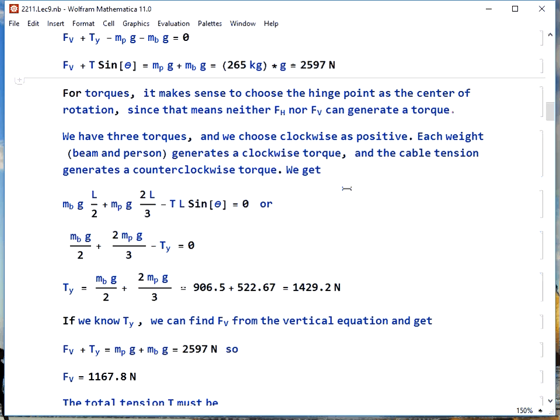We'll pick clockwise torques as positive. That means the weight of the person and the weight of the beam both generate clockwise torques. Cable tension gives us a counterclockwise torque. We know we have to have one from somewhere if we're going to get these things to sum up to zero.